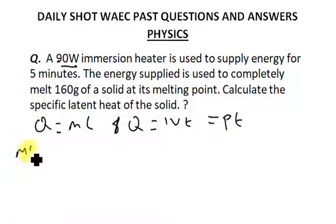We can say that mL equals Pt. Q and Q are the same, so we can equate the two of them. If we equate them, then mL—160 times L—equals P, which is 90 watts, times t.